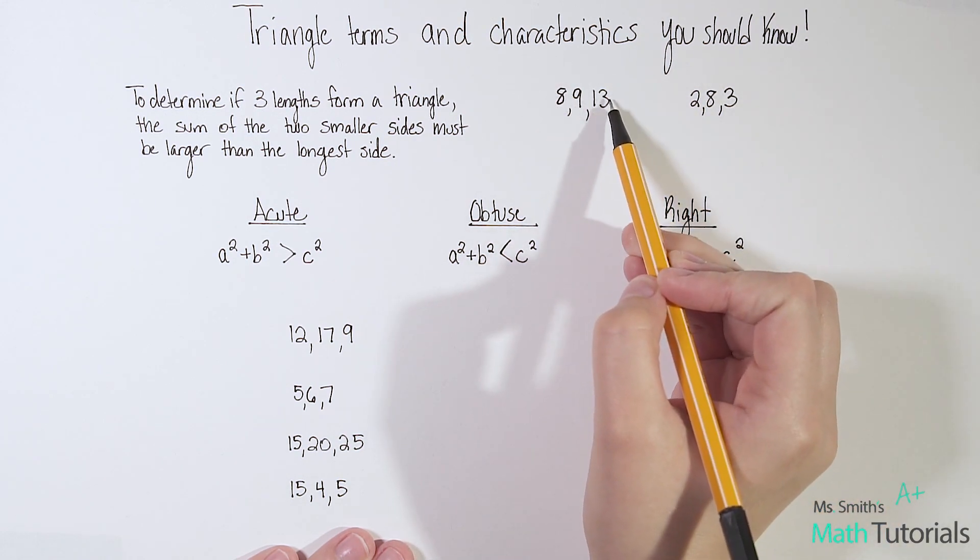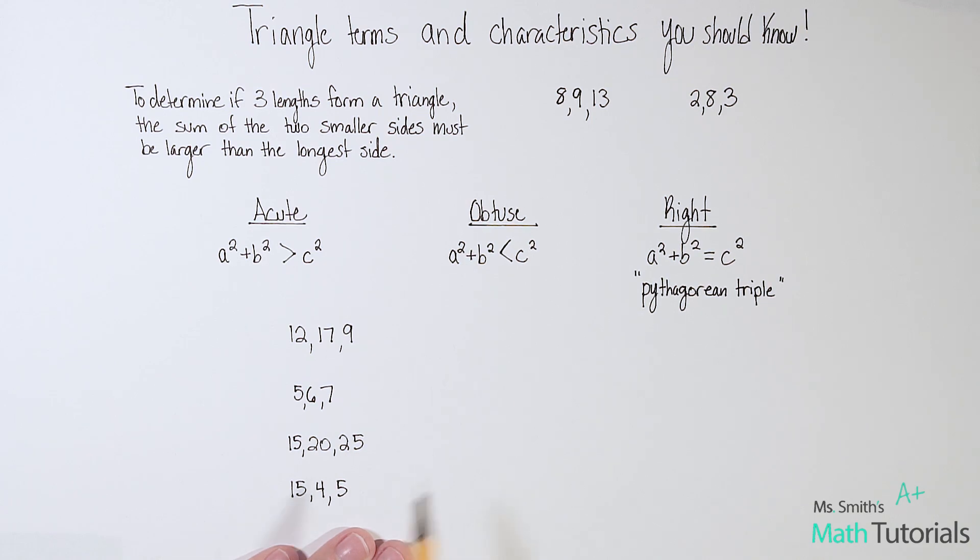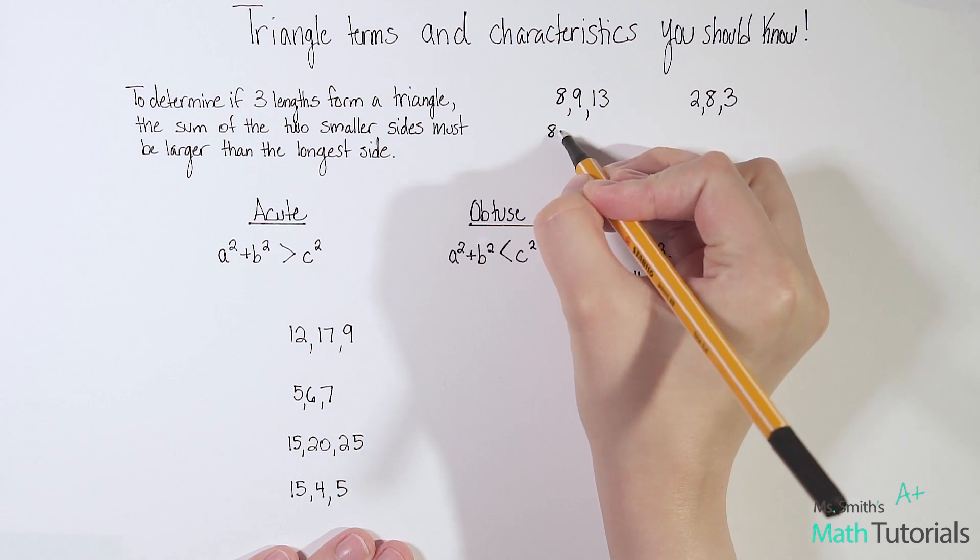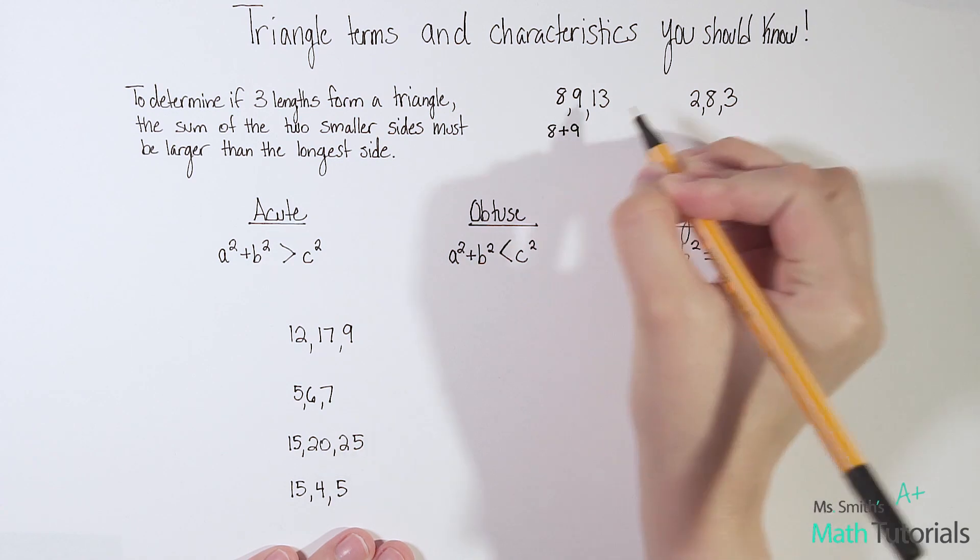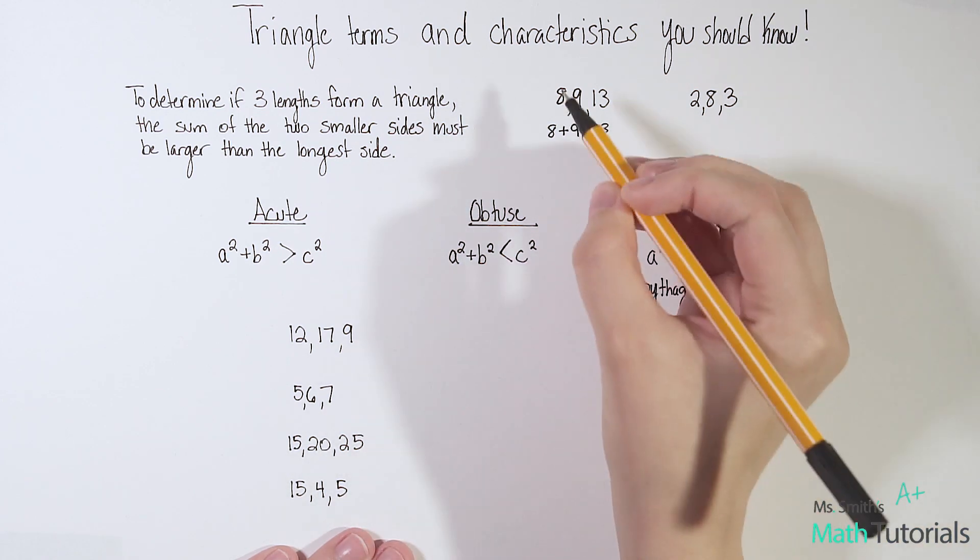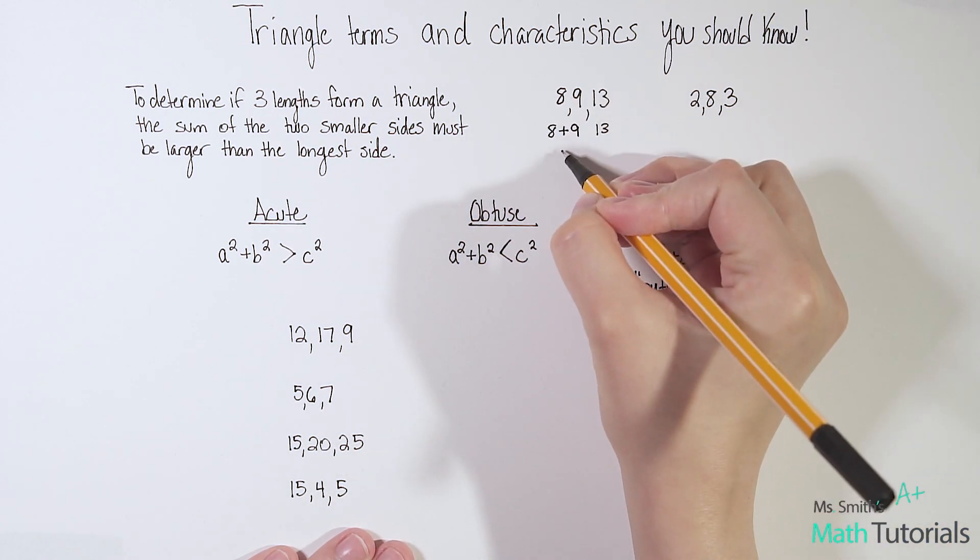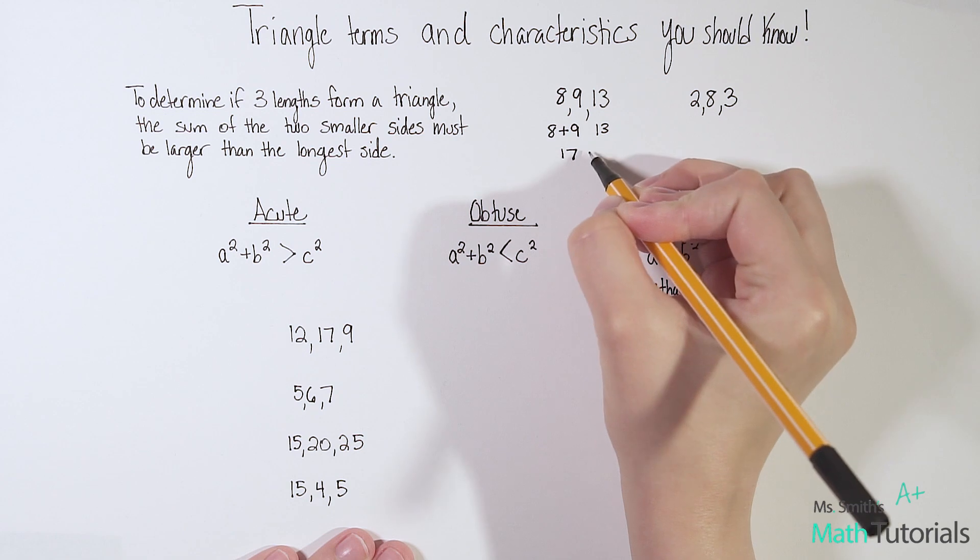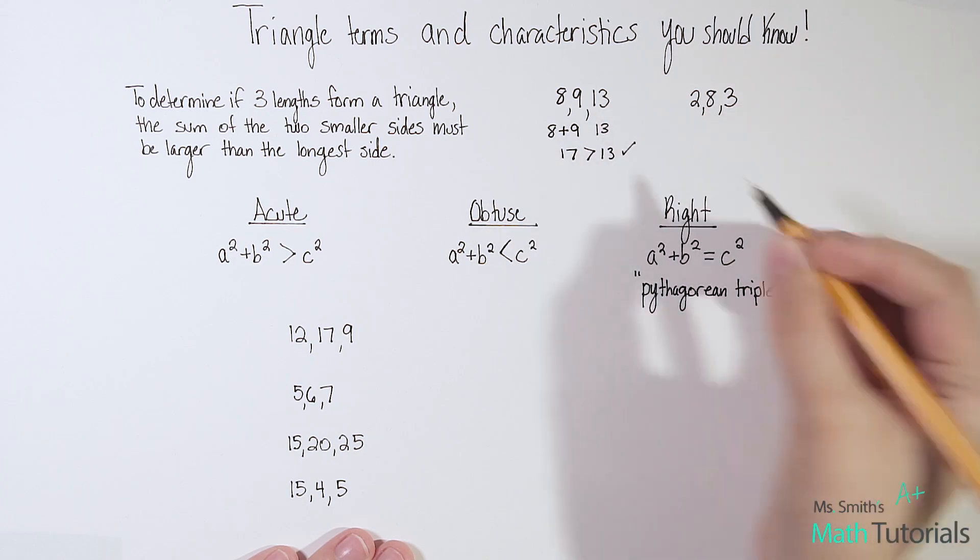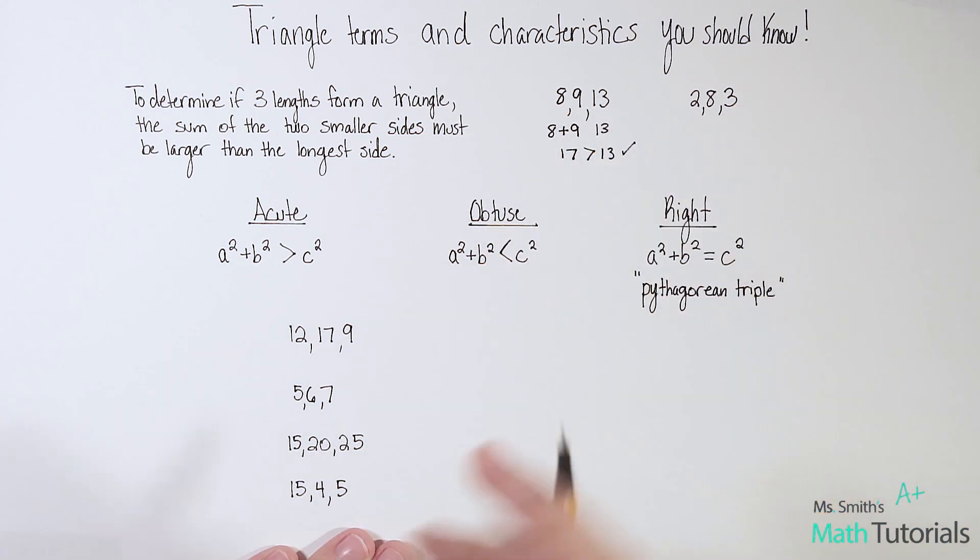Here's 8, 9, and 13. So I would say okay my two smallest sides are 8 and 9. So I would say okay 8 plus 9. What is their relation to 13? Okay well 8 plus 9 I know is 17. And is 17 greater than 13? Yes, right? So these three lengths can reasonably form a triangle.